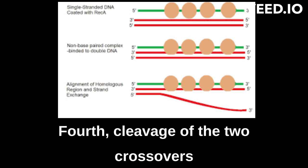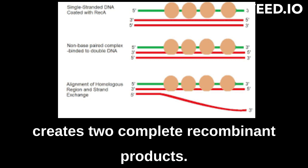Fourth, cleavage of the two crossovers creates two complete recombinant products.